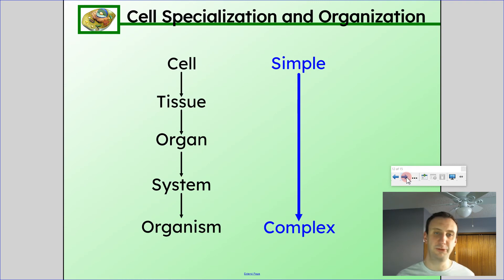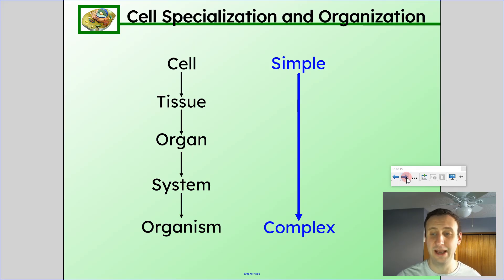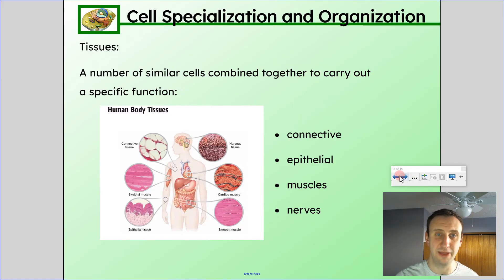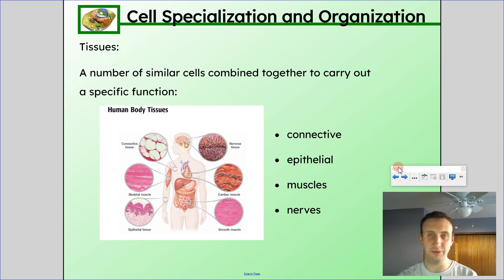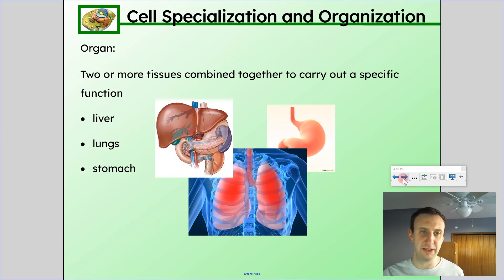This is a bit of review from a previous lesson, but remember: a cell is the simplest unit of life. If we have multiple cells of one type together, we call that a tissue. Tissues are a number of similar cells combined together to carry out a specific function. Some examples of tissues are connective tissue, epithelial tissue — which is any surface inside or outside the body — muscle tissue, and nerves. It's essentially cells of the same type put together to make a tissue.